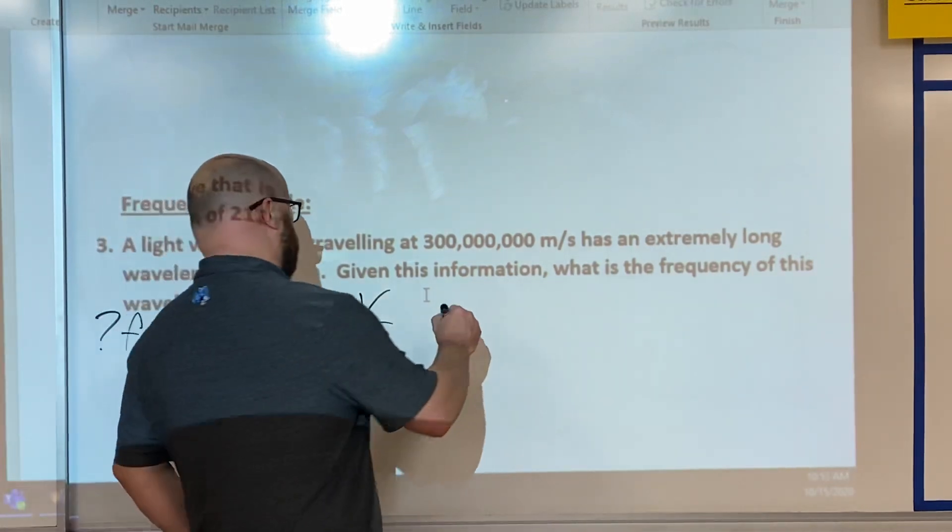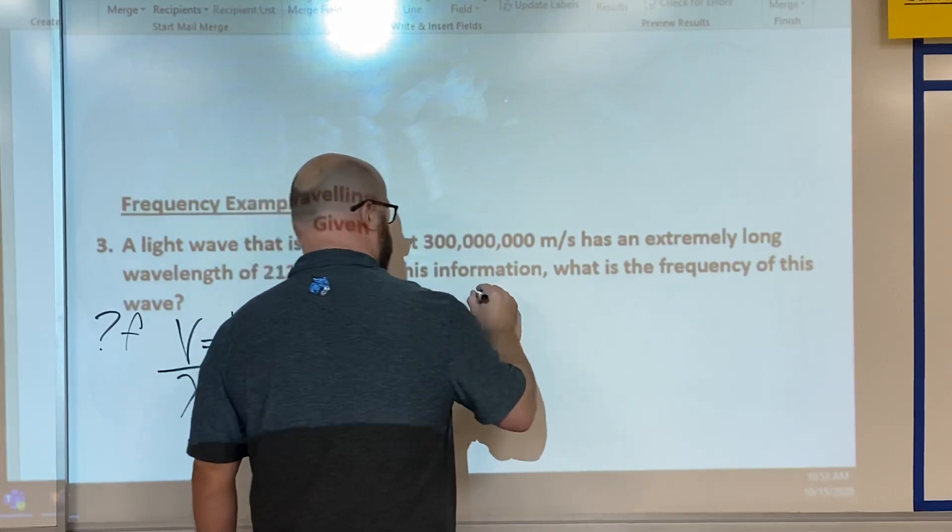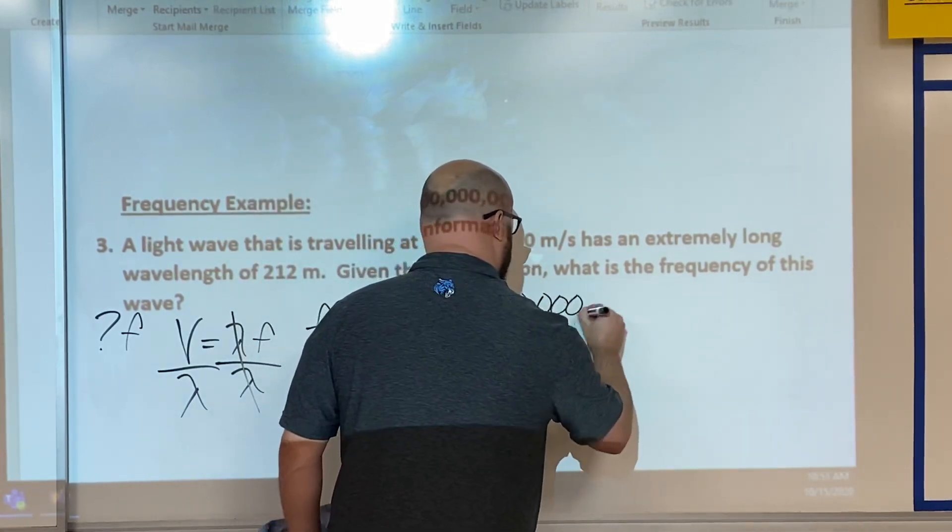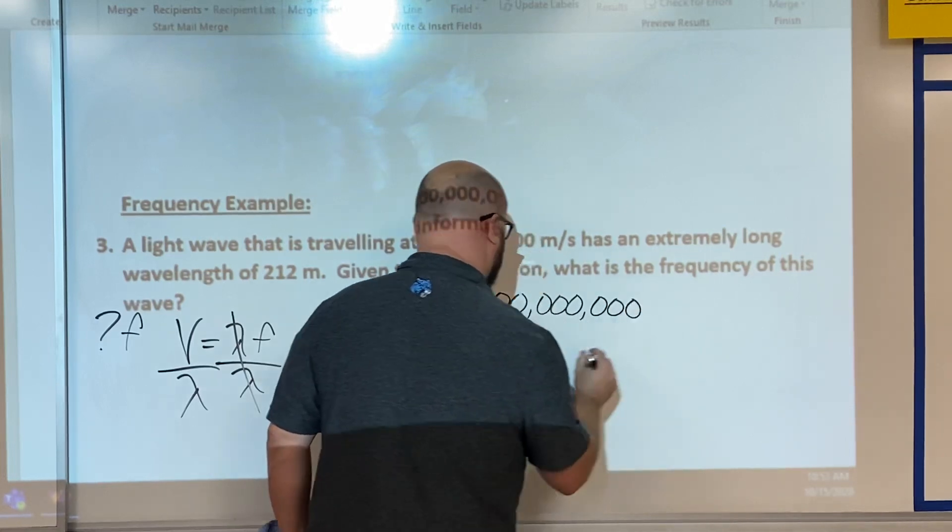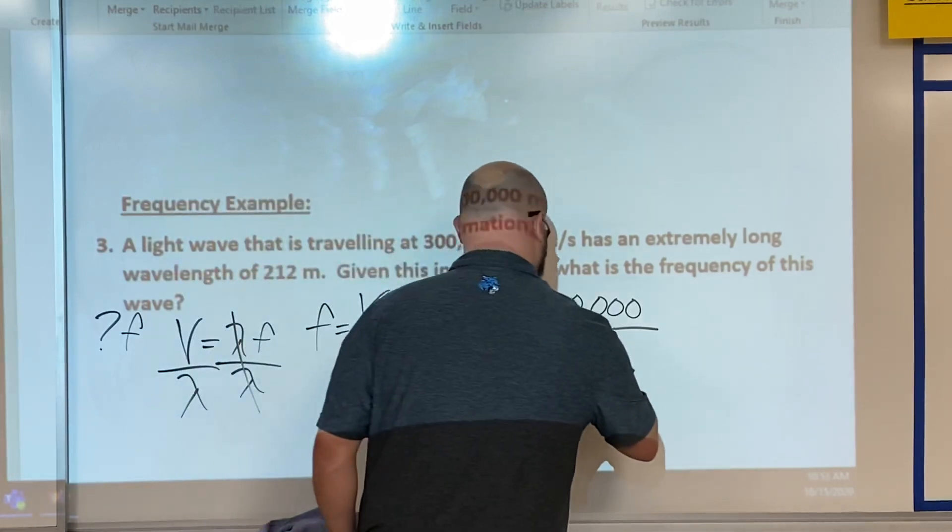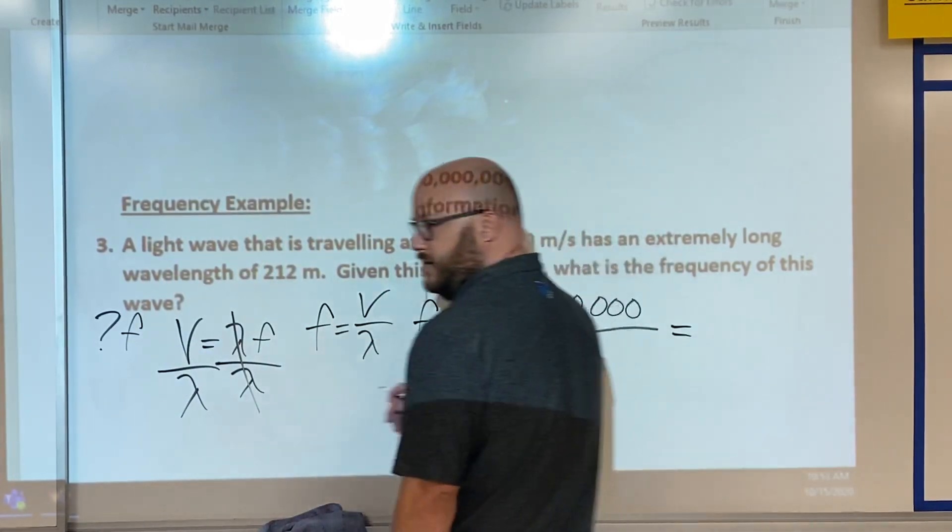We're looking for frequency, so velocity 300 million divided by 212. This is not going to be a pretty number.